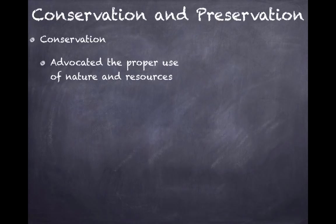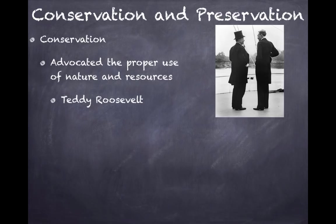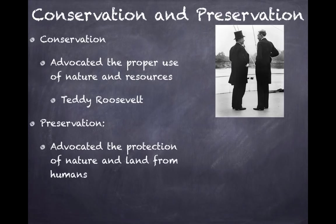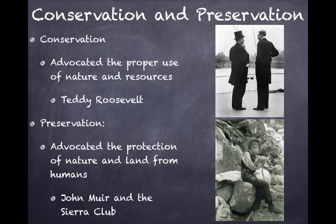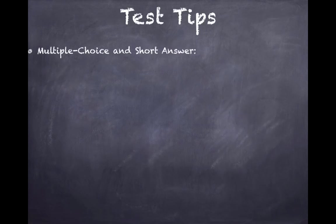Conservation and preservation — two terms you should know. Conservation advocated the proper use of nature and resources, so humans could use the wilderness; an example of this is Teddy Roosevelt. Preservation is protecting nature and land from humans, keeping humans out of the wilderness; this was advocated by John Muir and the Sierra Club. There is also a dedicated video on Conservation and Preservation in the Progressive Era with much more detail.